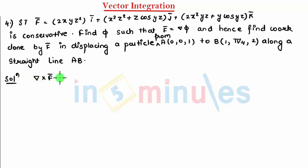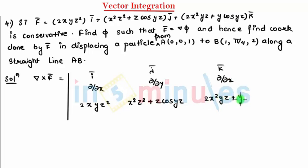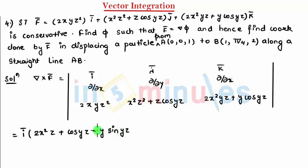Our first step is to find ∇×F̄. Setting up the determinant: the i-component involves ∂/∂x with 2xyz², the j-component involves ∂/∂y with x²z² + z·cos(yz), and the k-component involves ∂/∂z with 2x²yz + y·cos(yz). For the i-bar term, differentiating with respect to y gives 2x²z, and for the cos(yz) term we apply the product rule, getting cos(yz) minus y·sin(yz)·z.